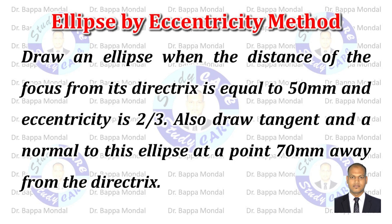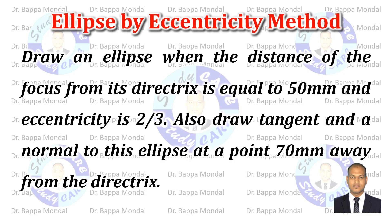Draw an ellipse when the distance of the focus from its directrix is equal to 50 millimeters and eccentricity is 2 by 3. Also draw a tangent and a normal to this ellipse at a point 70 millimeters away from the directrix.